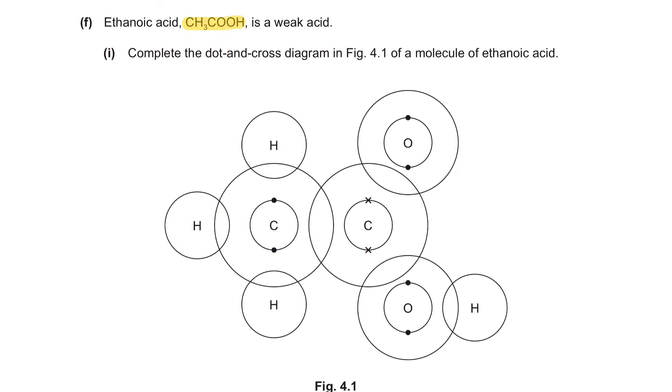Question F: Ethanoic acid CH3COOH is a weak acid. Part 1: Complete the dot-and-cross diagram in figure 4.1 of a molecule of ethanoic acid. You're only required to fill in dots or crosses on the outermost shell of each atom. So the first step here is to write down the electron configuration for each atom, and the next step is to identify how many more electrons are needed for this atom to become stable.